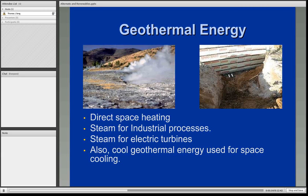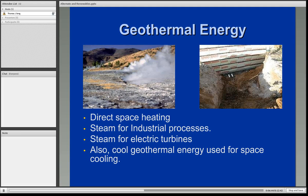Geothermal energy is basically taking the naturally occurring energy that exists below the surface of the Earth for both heating and cooling purposes. Almost everyone is familiar with geysers and natural steam that emanates from the ground, which can be harnessed for industrial purposes, space heating, and to drive electric turbines. Less well known is the use of cool air below the surface for space cooling. This application has been utilized in homes and large businesses, where wells are drilled down 40 to 50 feet and the cool air is brought up to the surface and piped into buildings, creating considerable savings on electricity for running air conditioning units.